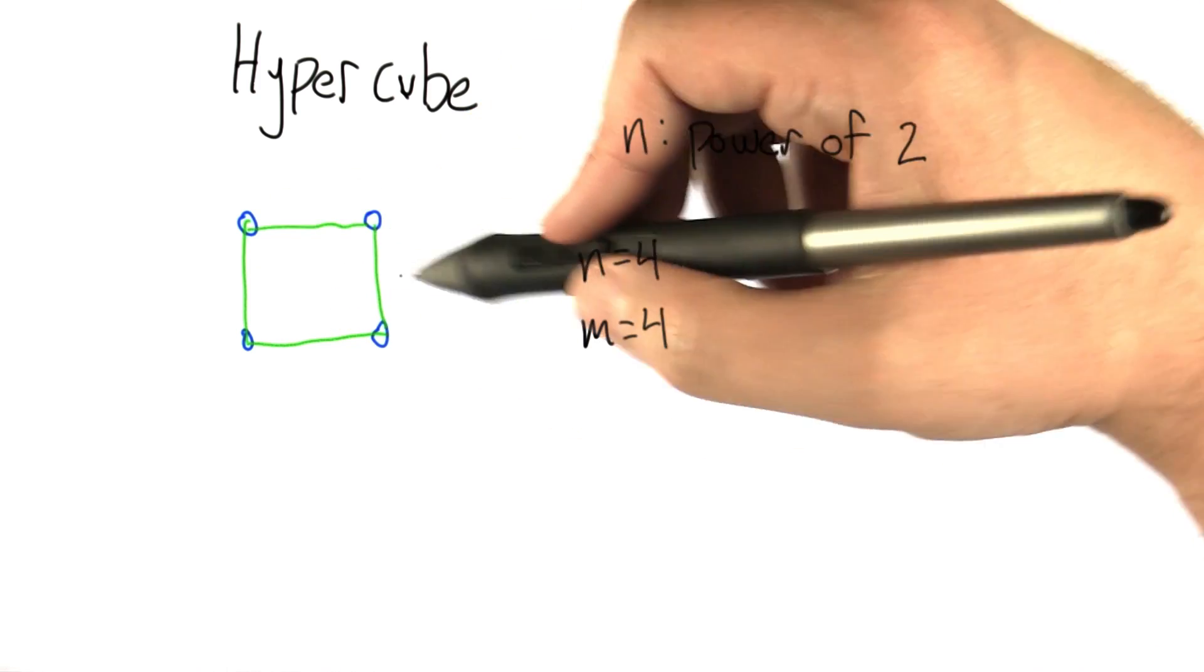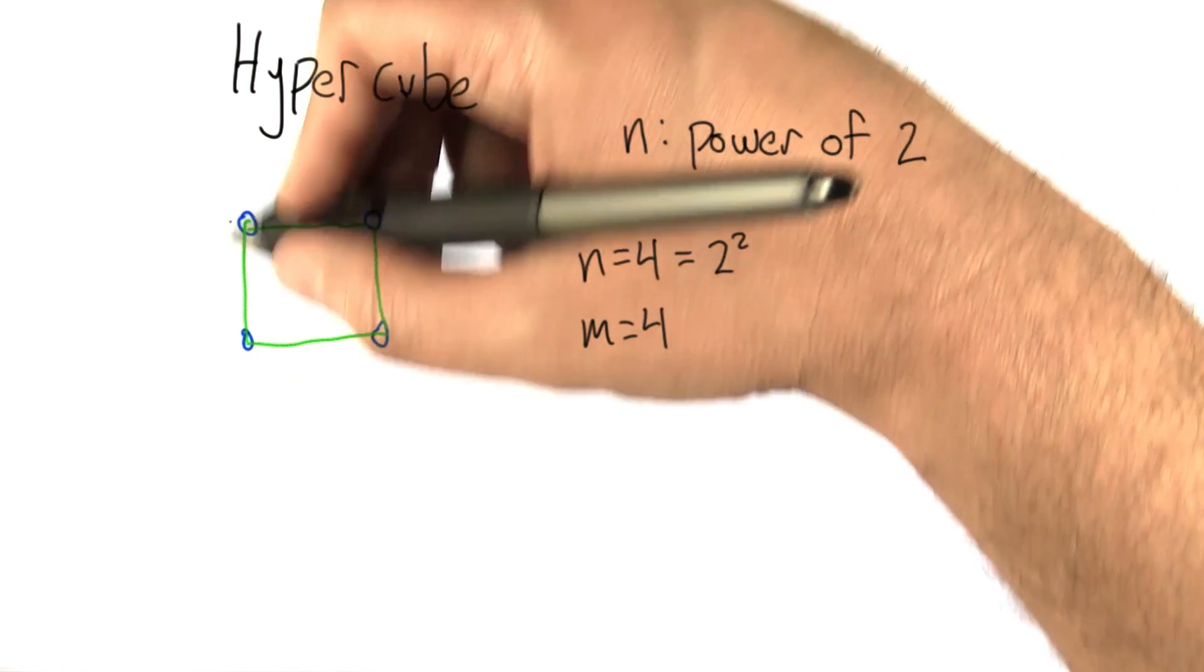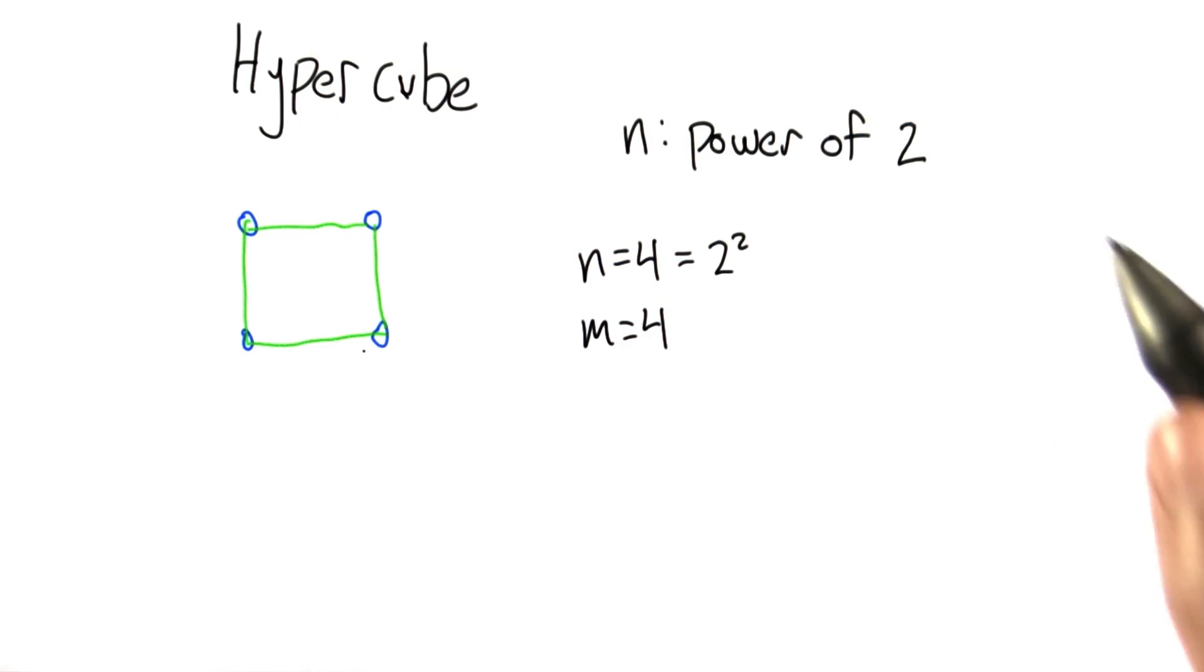Here we have 4 nodes, that's a power of 2, 2 squared. What we're going to do is connect edges up in a particular way. This is how we're going to do it.